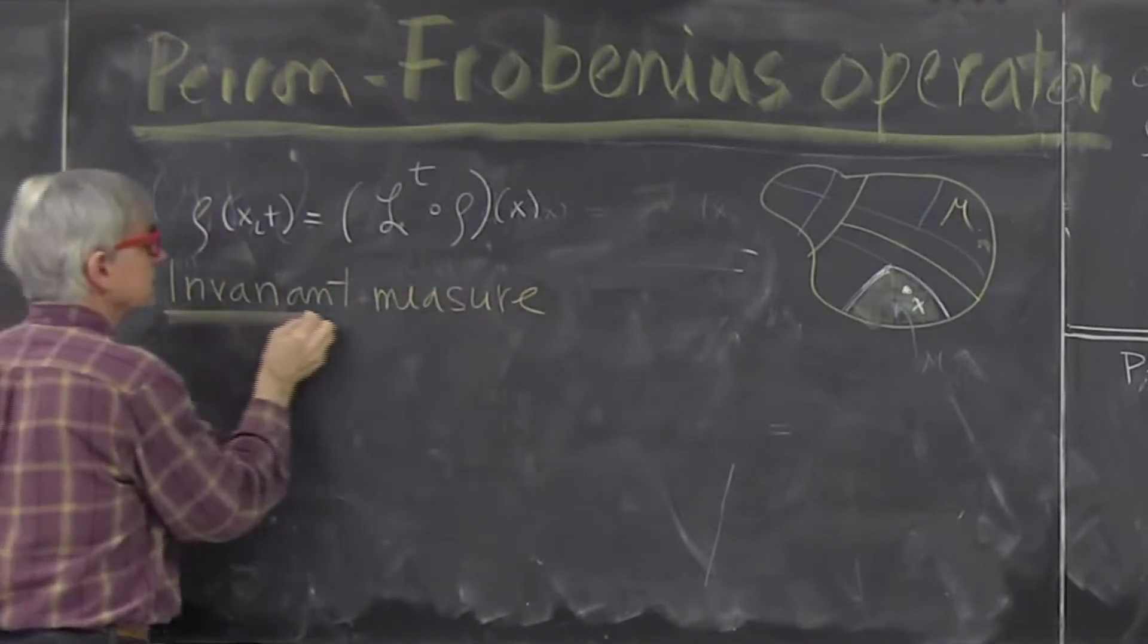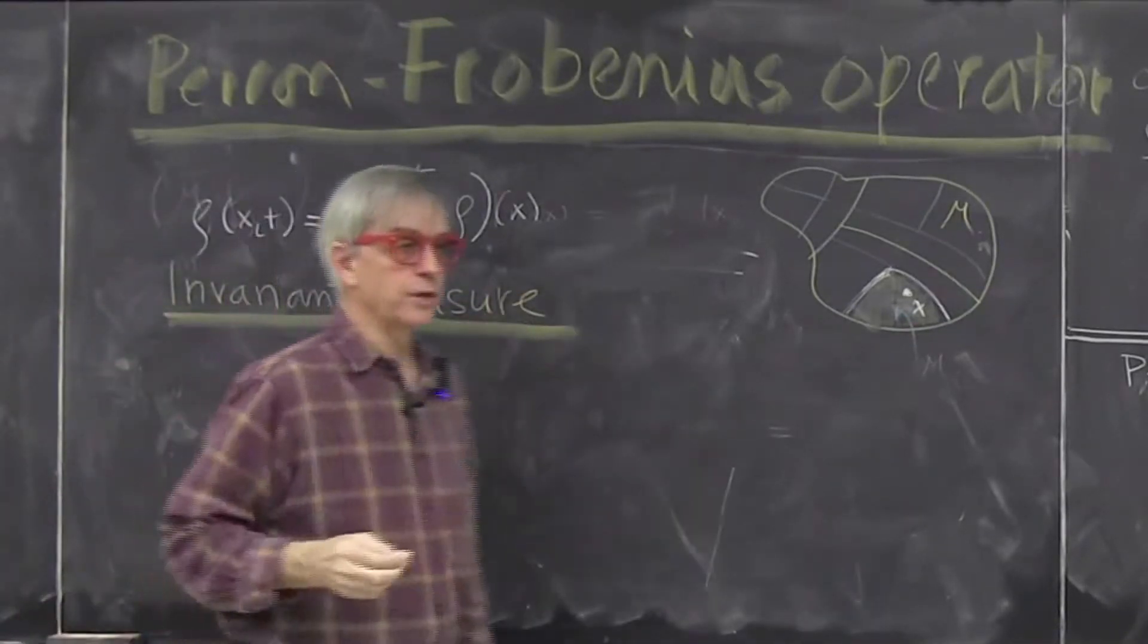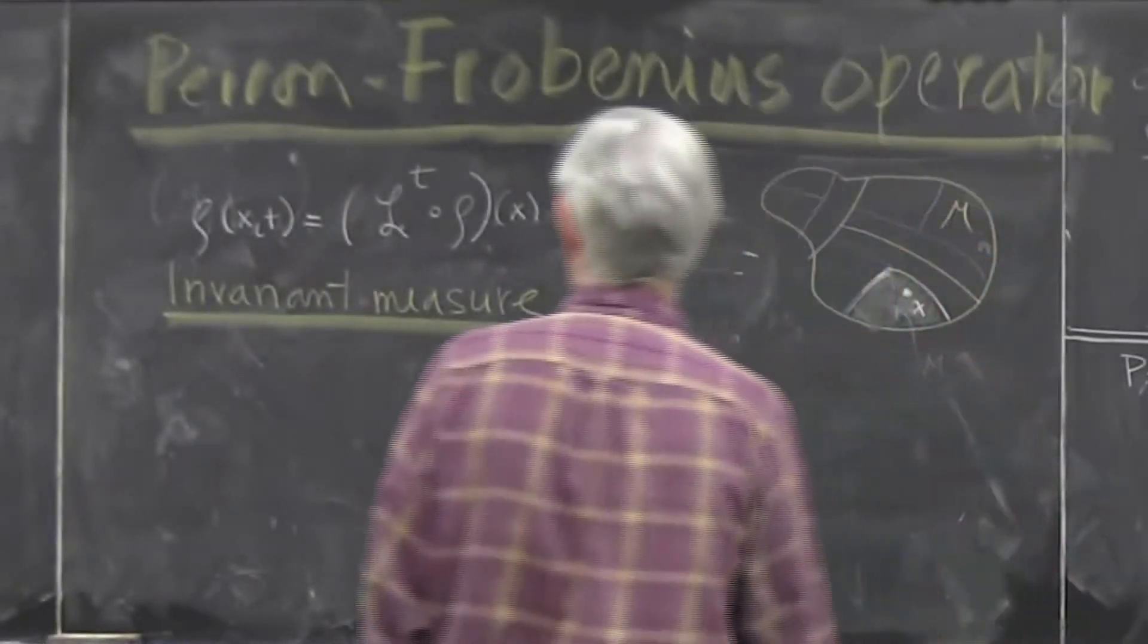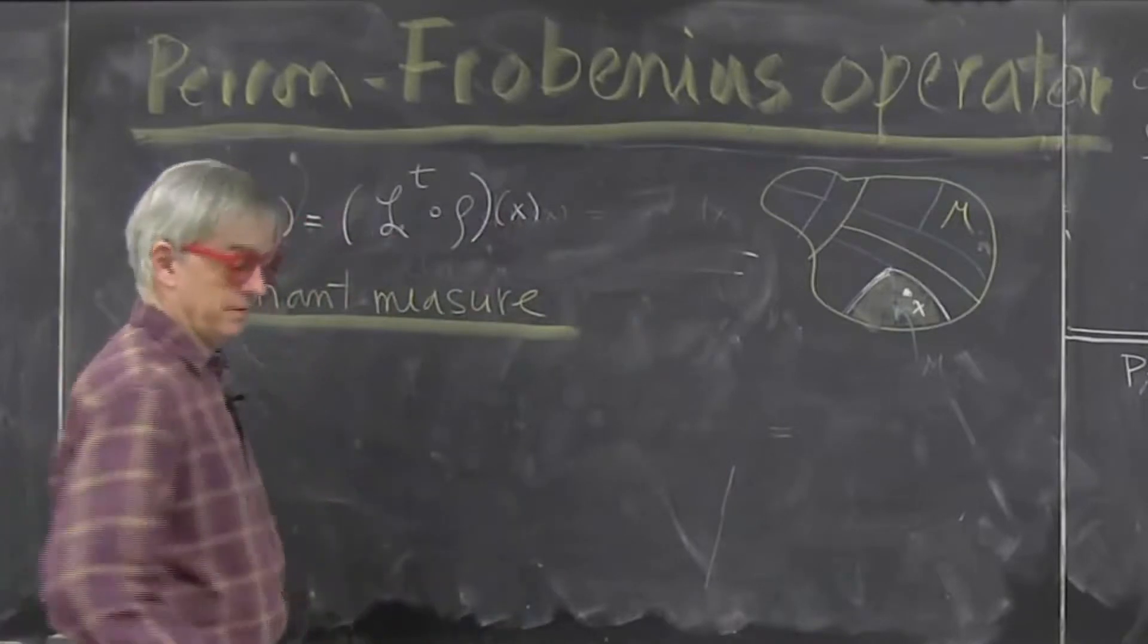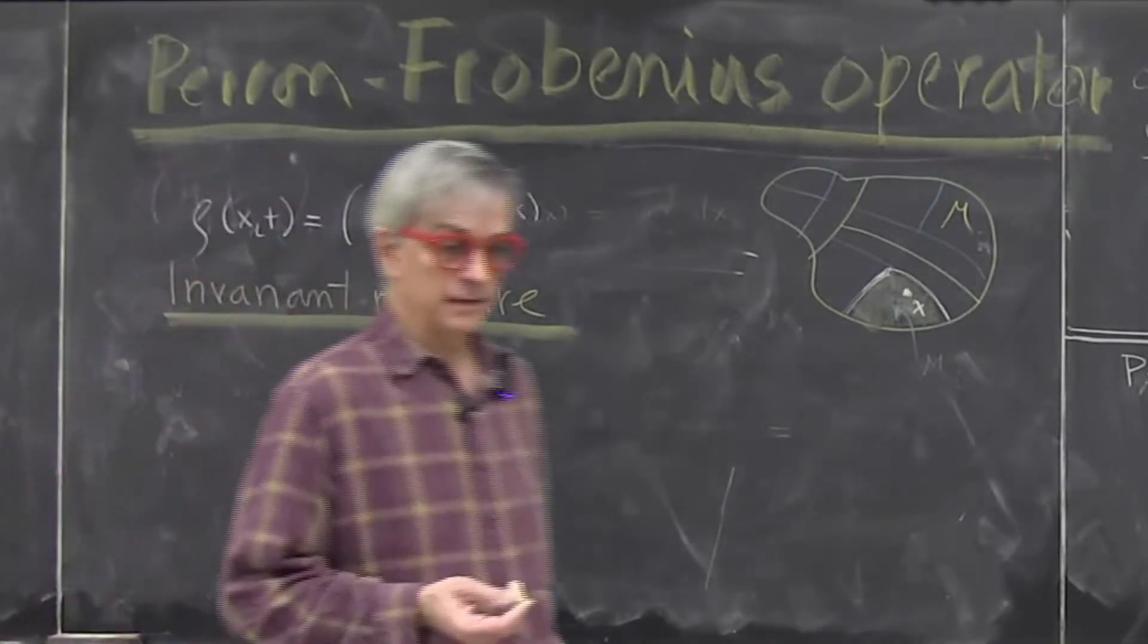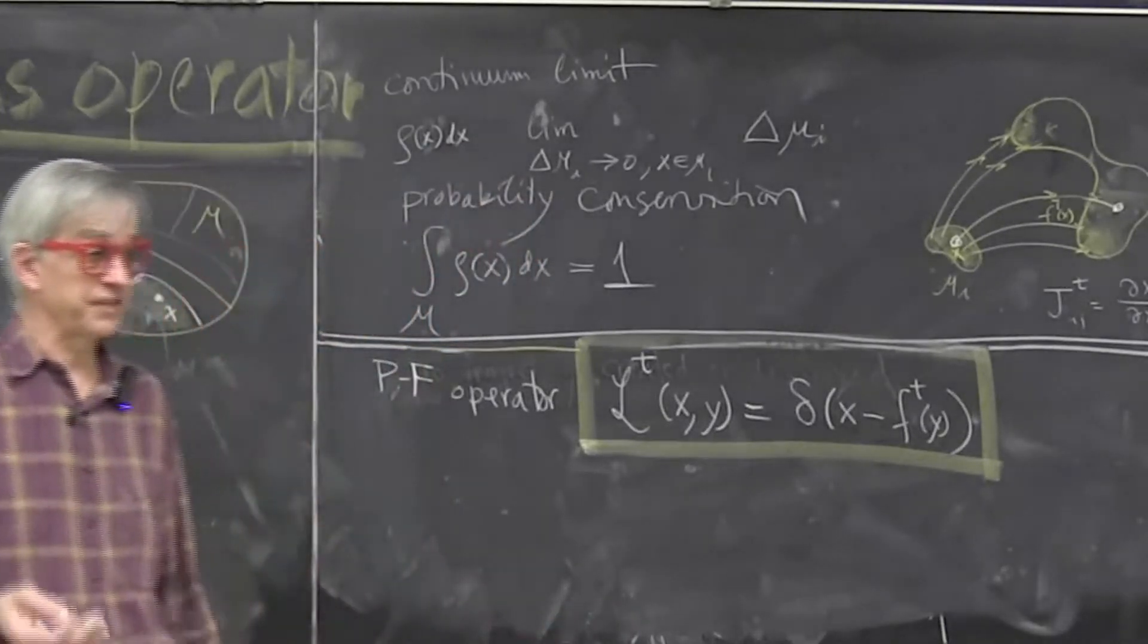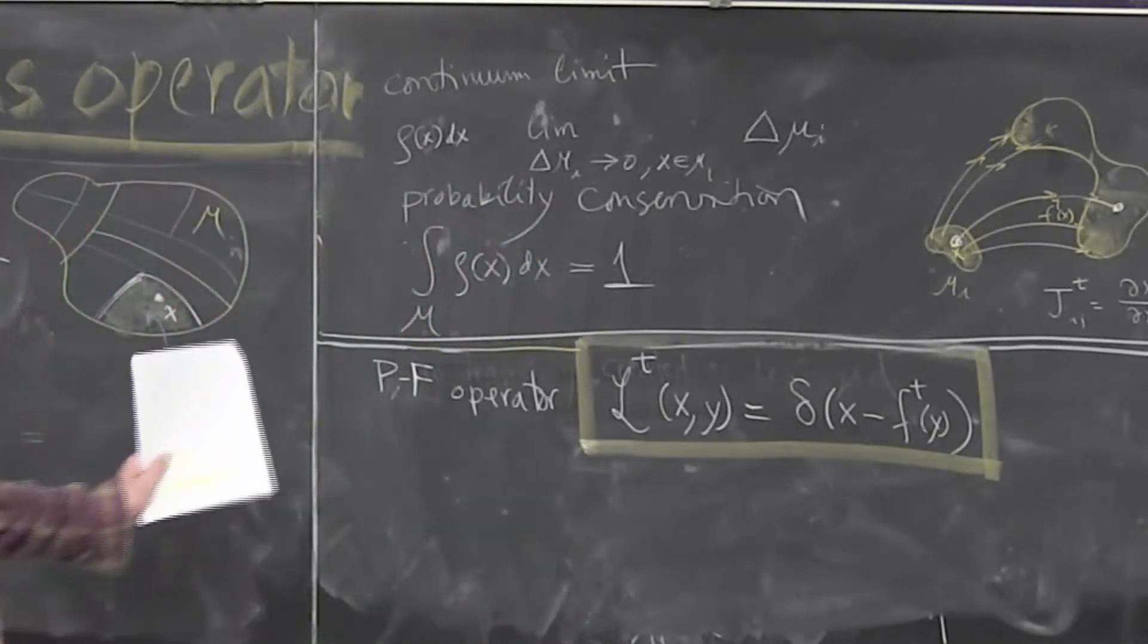If you do any numerical experiment with, let's say, a non-attractor, a two-dimensional system I gave you to play with, you'll just get it because you'll run the computer for a while and you'll discover it doesn't matter where you're running it, 100,000 or a million times you'll see the same density.